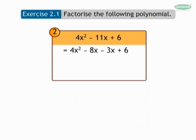Grouping first two and last two terms and taking common, we get 4x into x minus 2 minus 3 into x minus 2.